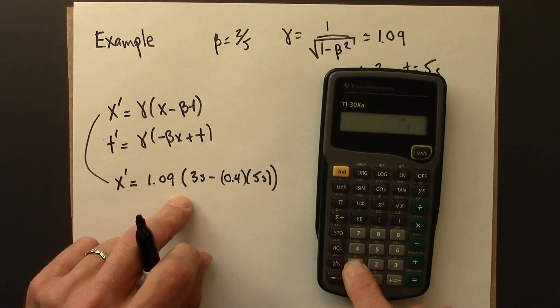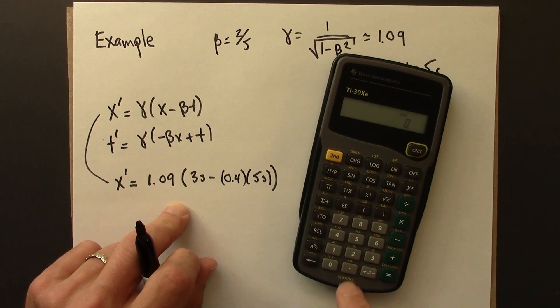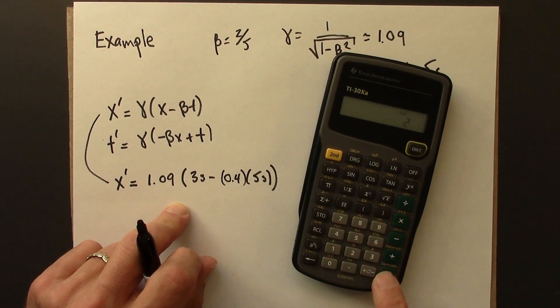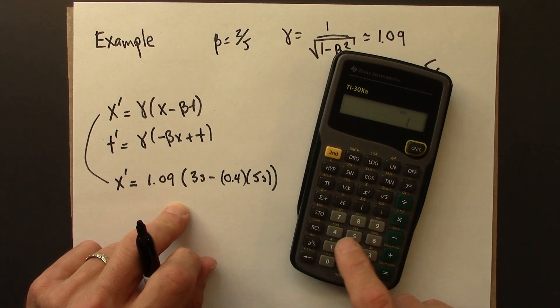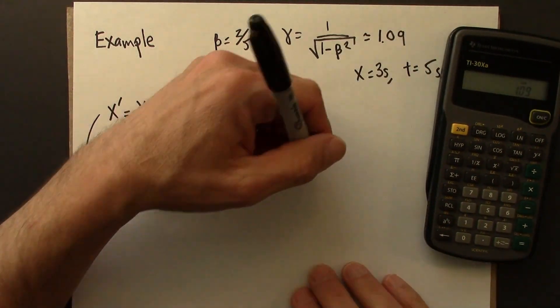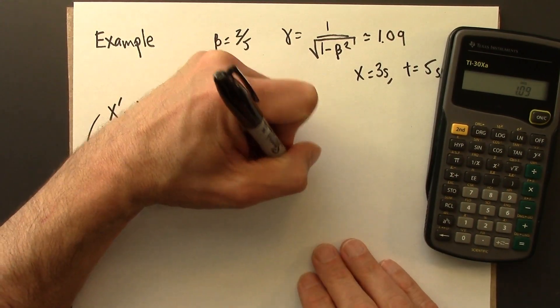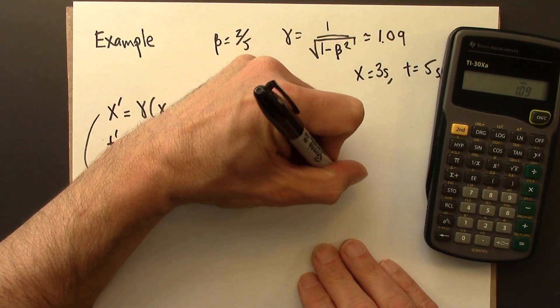Multiply by 1. Let's write this again: 0.4 times 5 is 2, make you negative, add 3 to you, equals, times 1.09. And that should be 1.09.